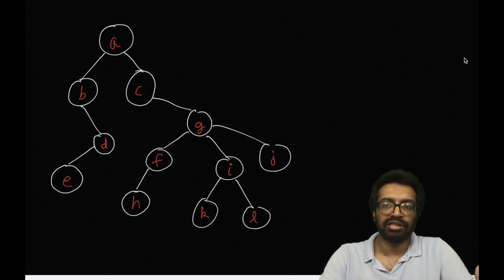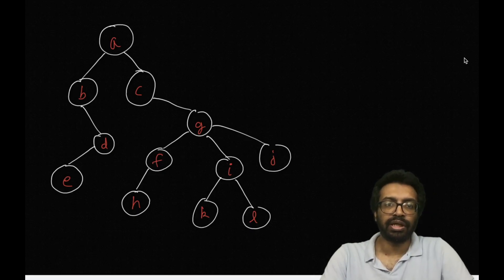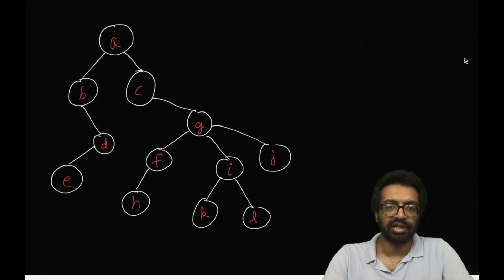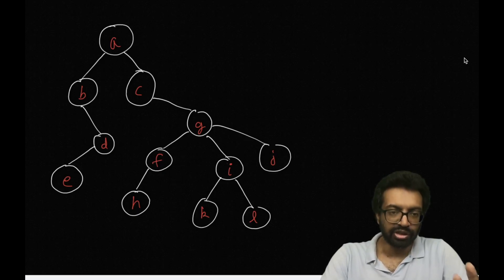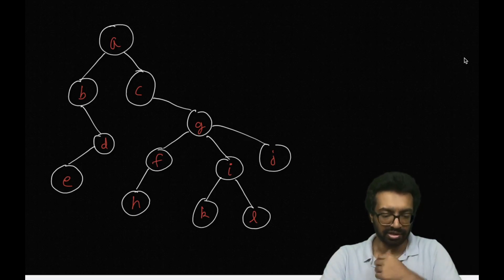Let's revisit the terminologies again. Here we are looking at a tree of letters from the English alphabet. We have from A, B, C, D up to L. All the nodes have different letters. This is for our easy identification of a node.